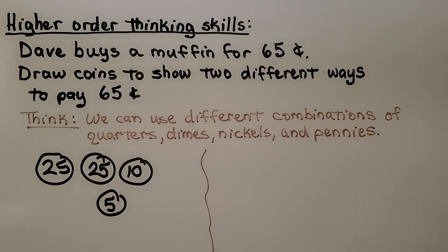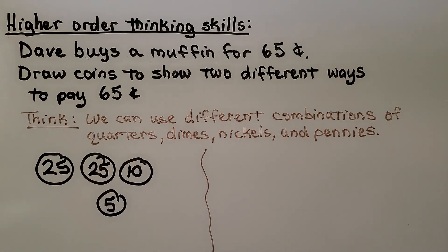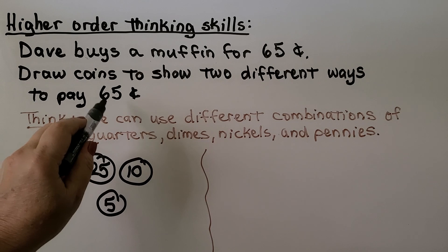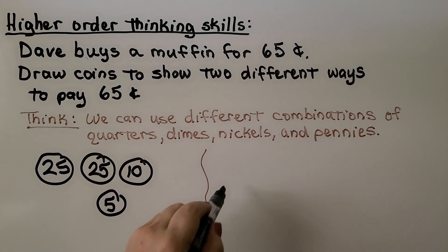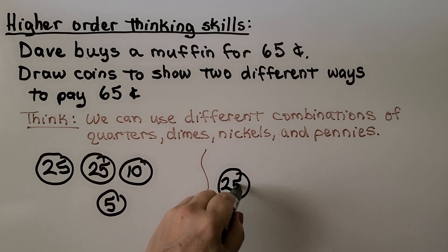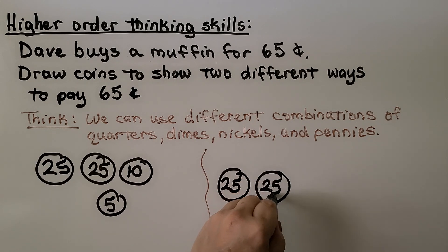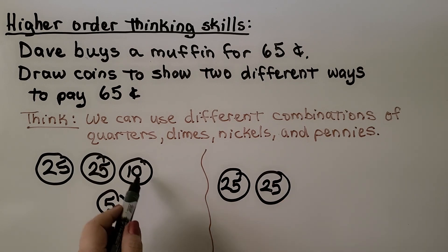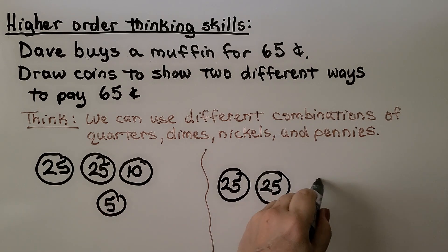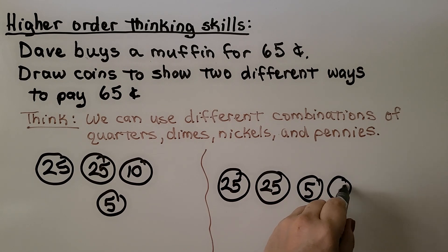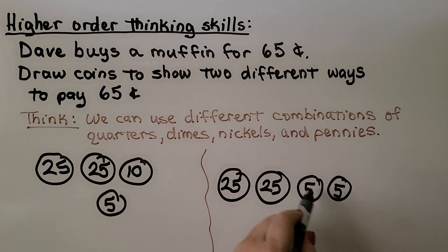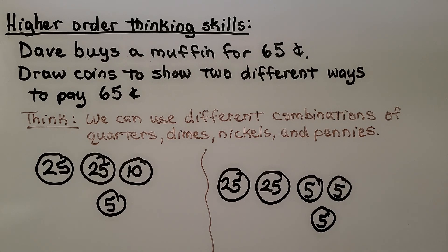Can you think of another way? We can break one of these coins into smaller value coins. We could do six dimes and a nickel — six tens and a five. We could also do two quarters and three nickels, making the dime into two nickels: 50 plus 10 is 60, plus one more nickel is 65 cents. We could even use 65 pennies, but that would be a lot of drawing.